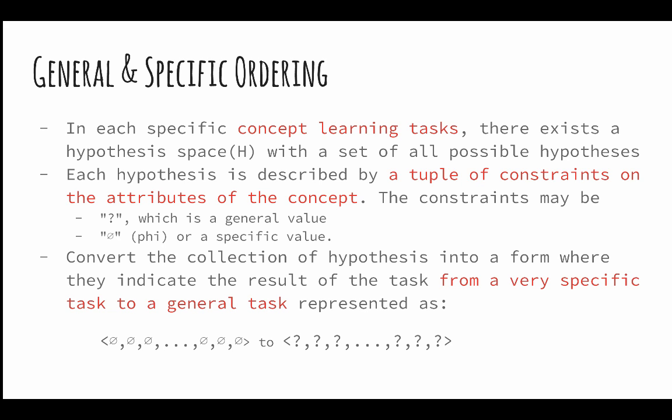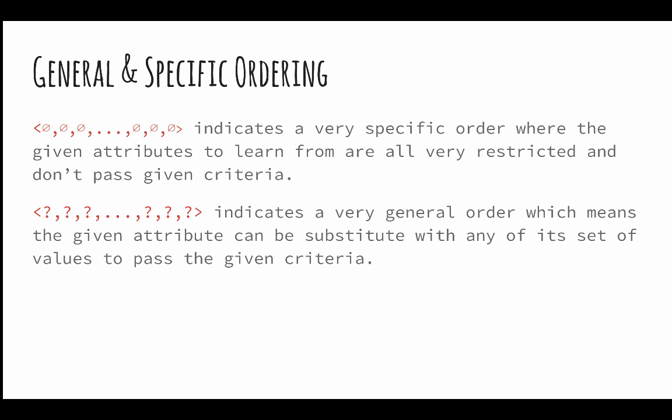At the same time, a general order, denoted by all question marks, is an order that marks the most general hypothesis, possibly satisfying the concept to be learned and allows any values learned from the hypothesis. So, a quick review: a set of phi's indicate a very specific ordering and are very restricted, whereas a general order means that a given attribute can substitute any of its values to pass a given concept learning criterion.